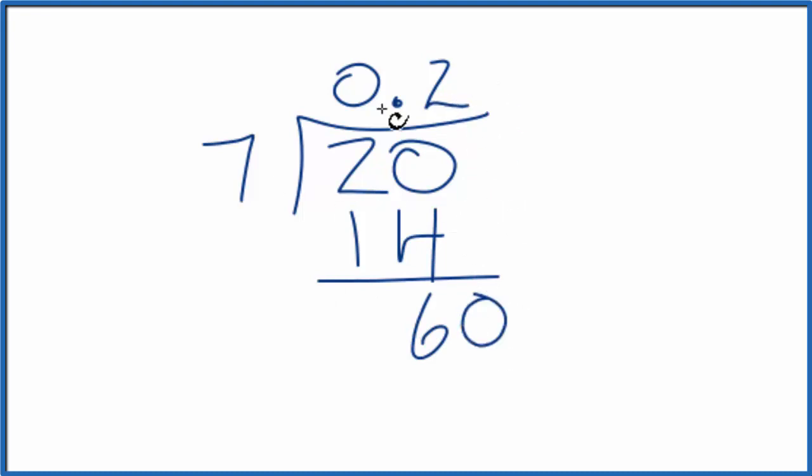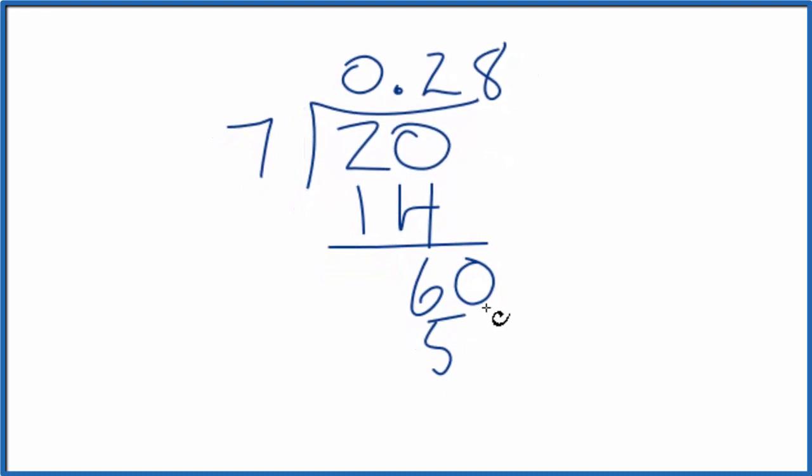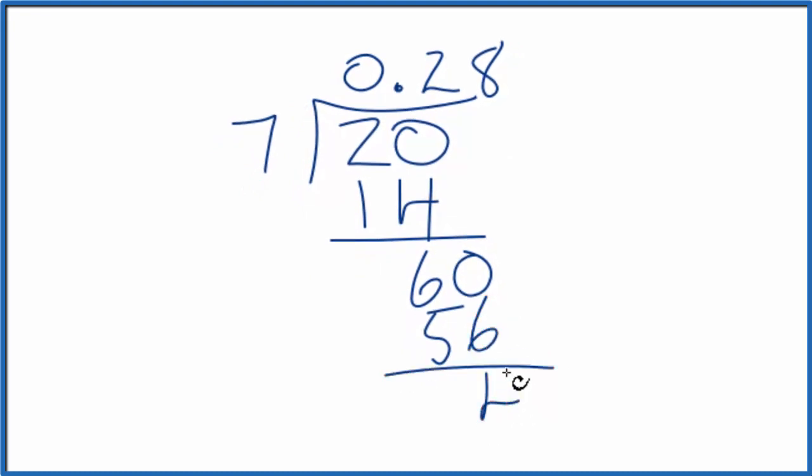We'll move over 1. 7 times 8, that's 56. Subtract, we get 4.